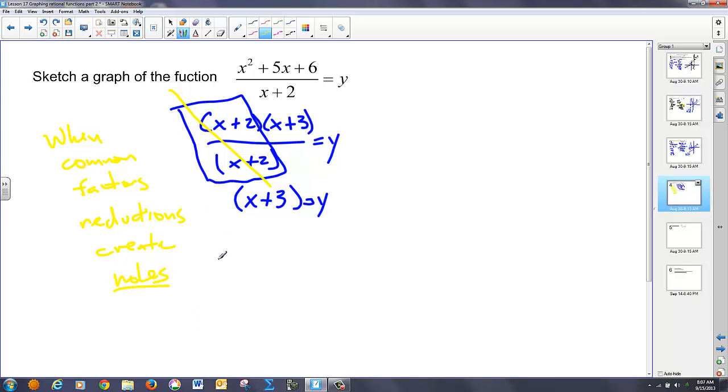Now. Where do those holes occur? They occur where the common factor reduction existed. So in this case. Since x plus 2 reduced. I set that equal to 0. And get at negative 2. I have a hole. Now where does that hole exist? The hole exists. At an x value of negative 2. And a y value of what's ever left in the function. So in this case. I'm going to plug negative 2 into what's left. And get y equaling 1. So at negative 2 comma 1. There's a hole in my graph. And let's see how this plays out.